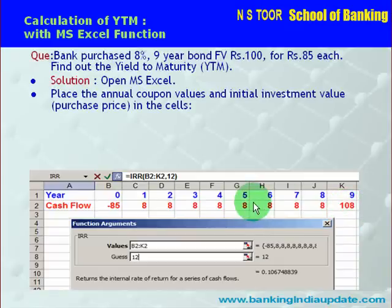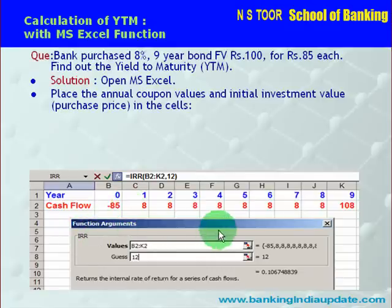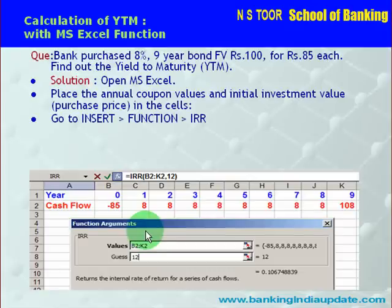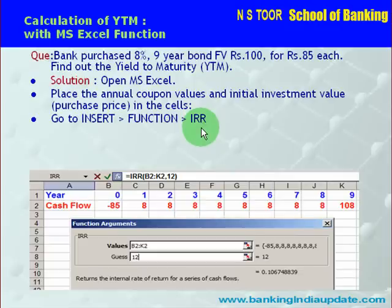Now, after inserting these values, we shall highlight them in the function. We will go to Insert in the menu, then go to Function, and thereafter go to IRR. Once we do that, this dialog box will open — it is labeled IRR. The calculation of IRR is similar to the calculation of YTM, and hence we are going to use this function.